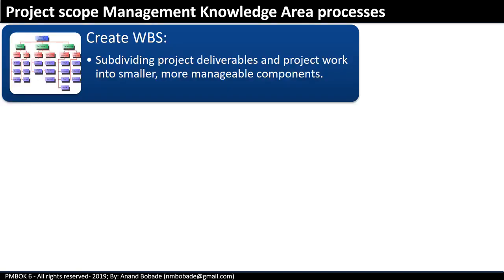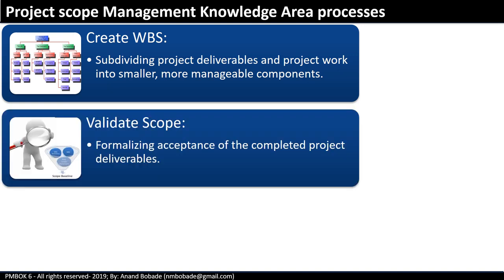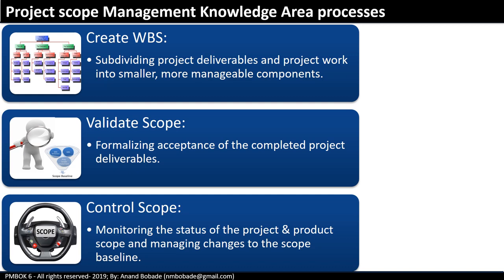Next is Create WBS (Work Breakdown Structure) — this is the process of finalizing the scope baseline, so the output of Create WBS is the scope baseline. Then Validate Scope — this is the business acceptance process where you formalize acceptance of completed project deliverables from the business and obtain their signatures. Finally, Control Scope — the process of monitoring the scope status and managing changes to the scope baseline, since the scope will not always remain the same as defined at the beginning.